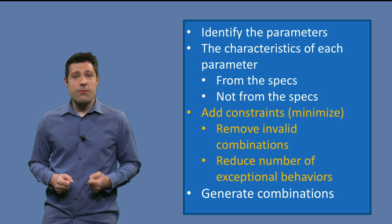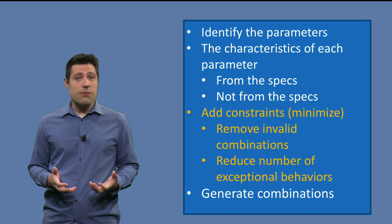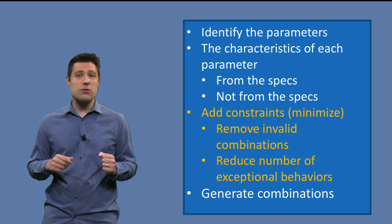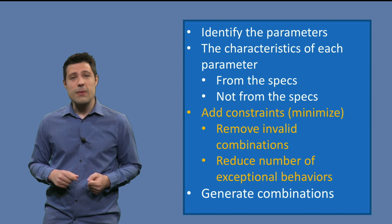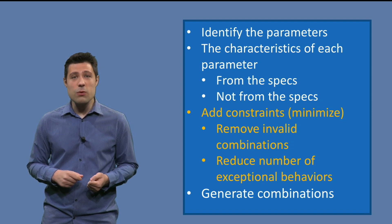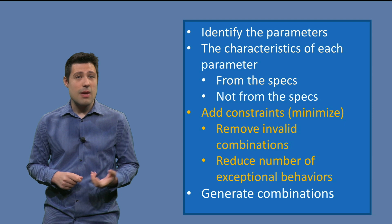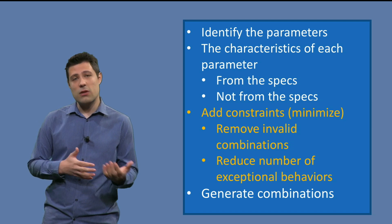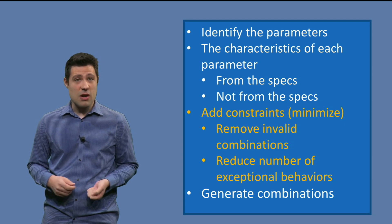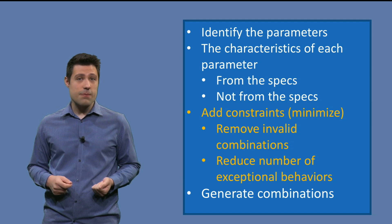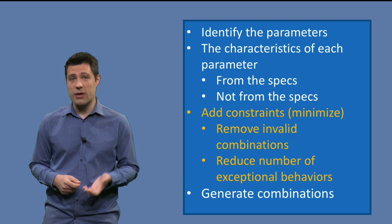So what we do before is to minimize the number of combinations by adding constraints to the parameters. For example, depending on the problem, we are able to remove invalid combinations. Maybe some characteristic can't be mixed with another characteristic, or we can isolate exceptional behavior, test it just once and avoid all the combinations with it.